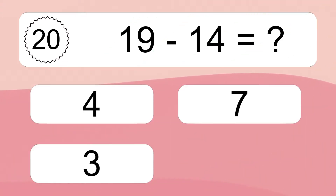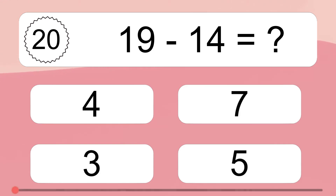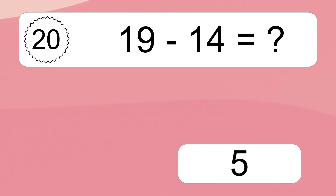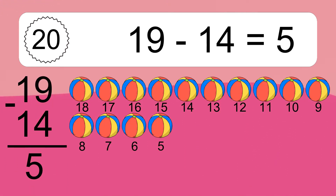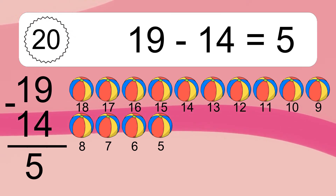19 minus 14 equals what? 19 minus 14 equals 5. Let's count it: 18, 17, 16, 15, 14, 13, 12, 11, 10, 9, 8, 7.